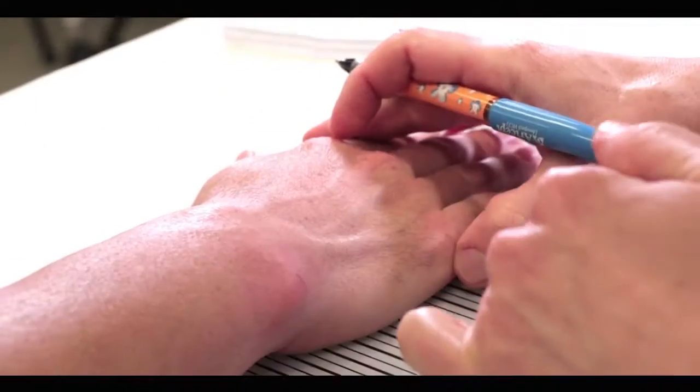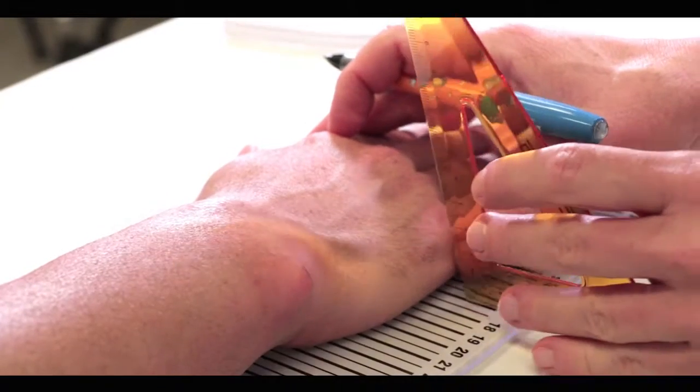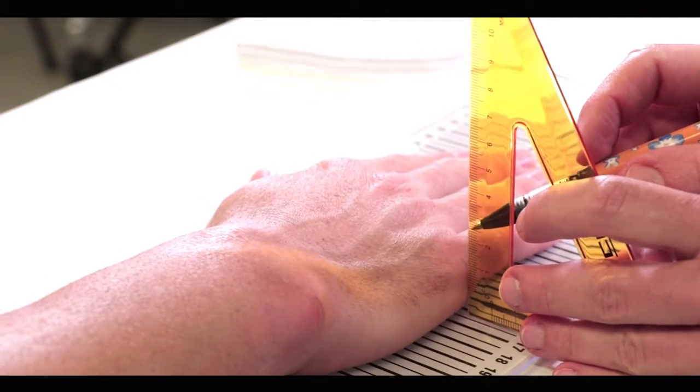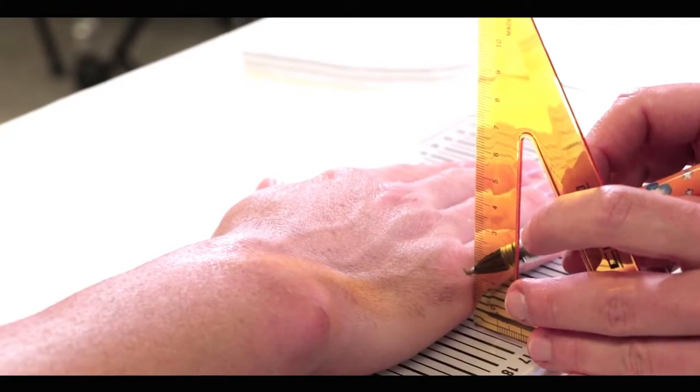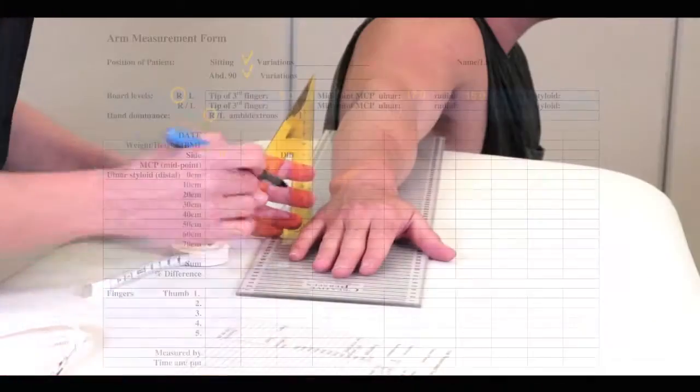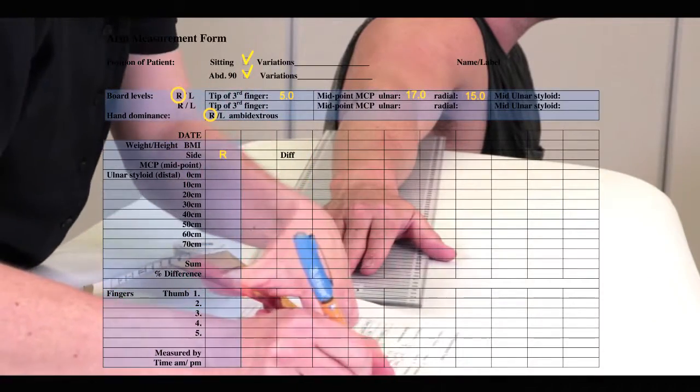When marking the arm, use a set square to ensure vertical alignment. Mark the skin with a pen on the distal side of the set square. These points will be used to measure the limb circumference later.